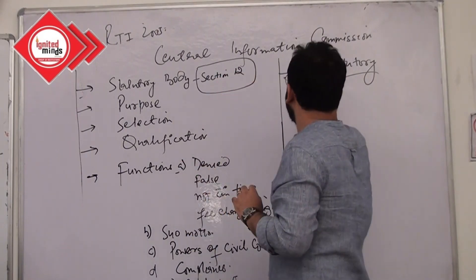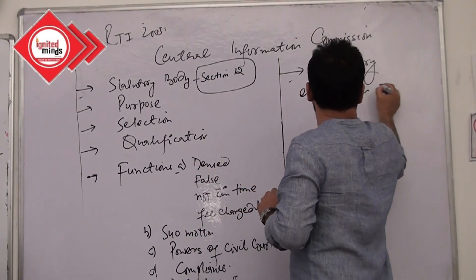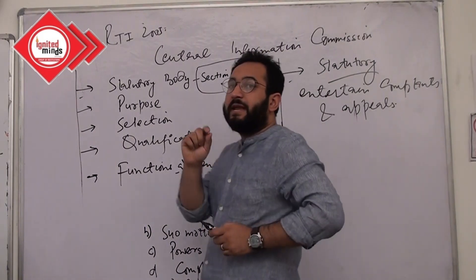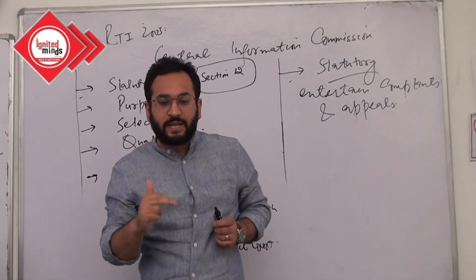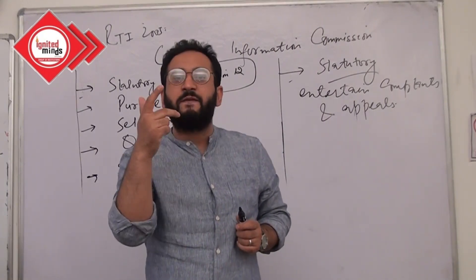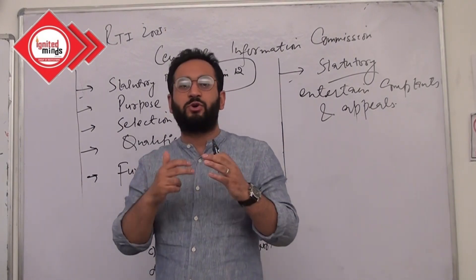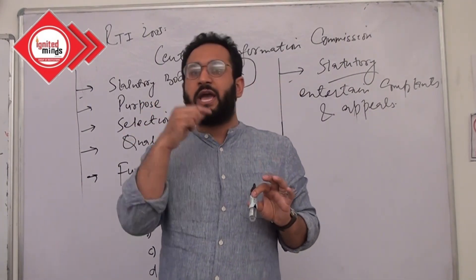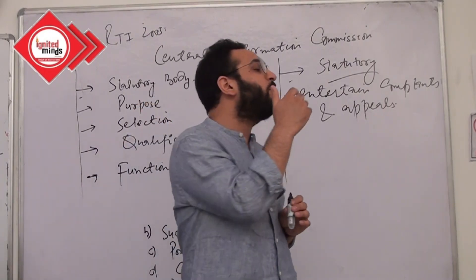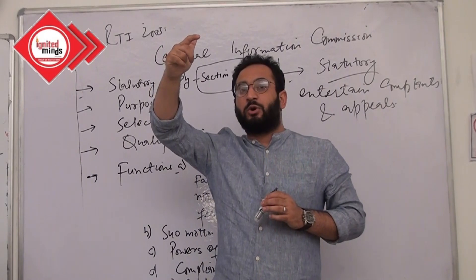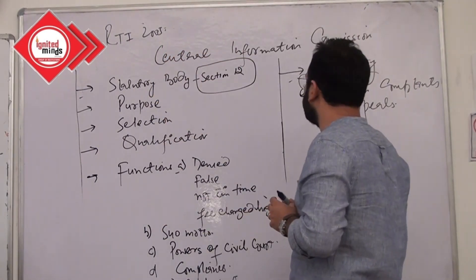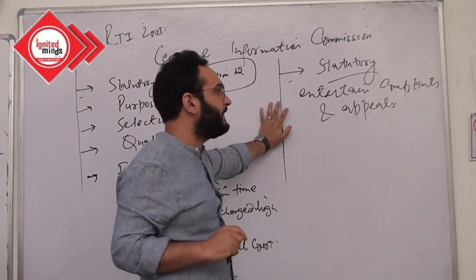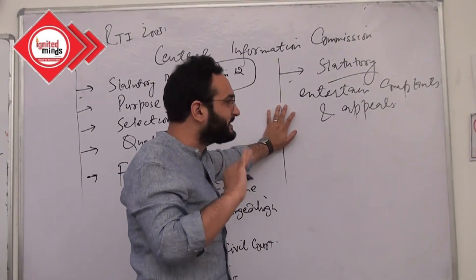The purpose of this commission is to listen to and entertain all the complaints and appeals. Whatever complaints or appeals come — where a lower authority or a Public Information Officer has given a decision, or a public authority gave a decision in response to an RTI application and you are not satisfied with it — you can go to a higher appellate authority. The final appellate authority you go to with your appeal or complaint is called the Central Information Commission.